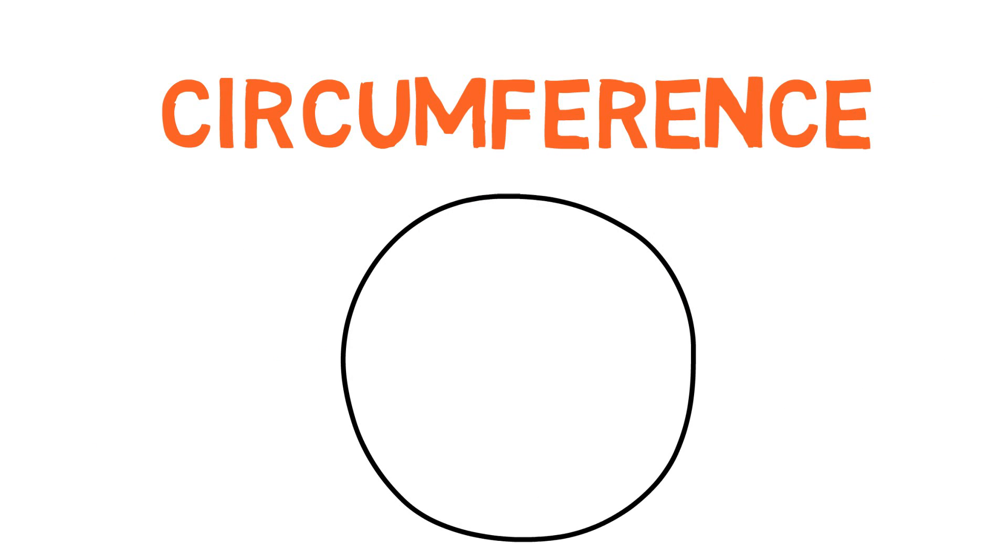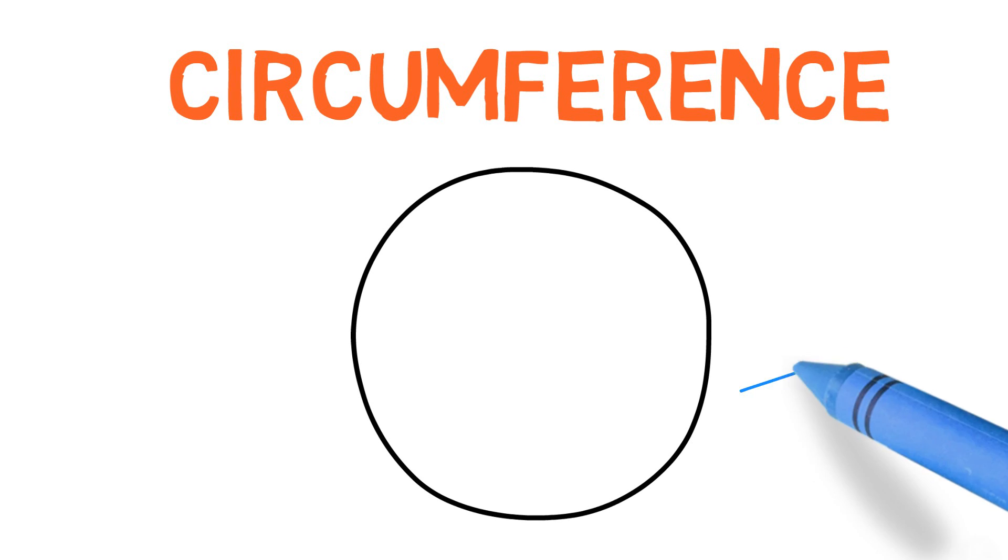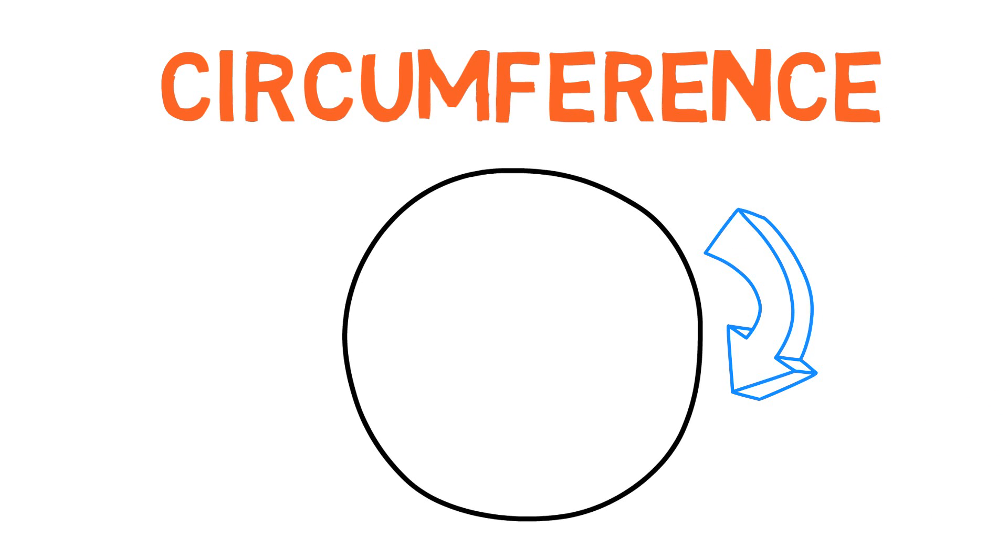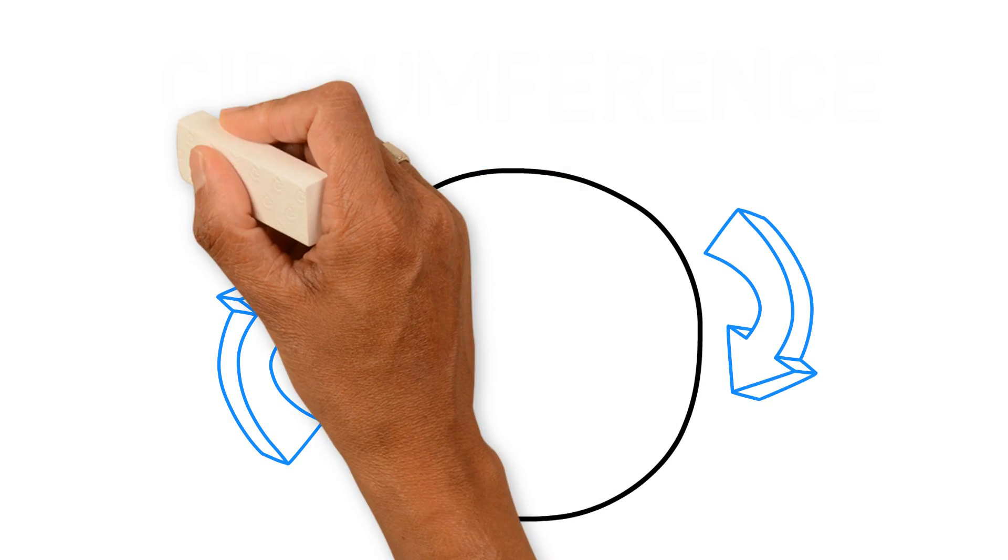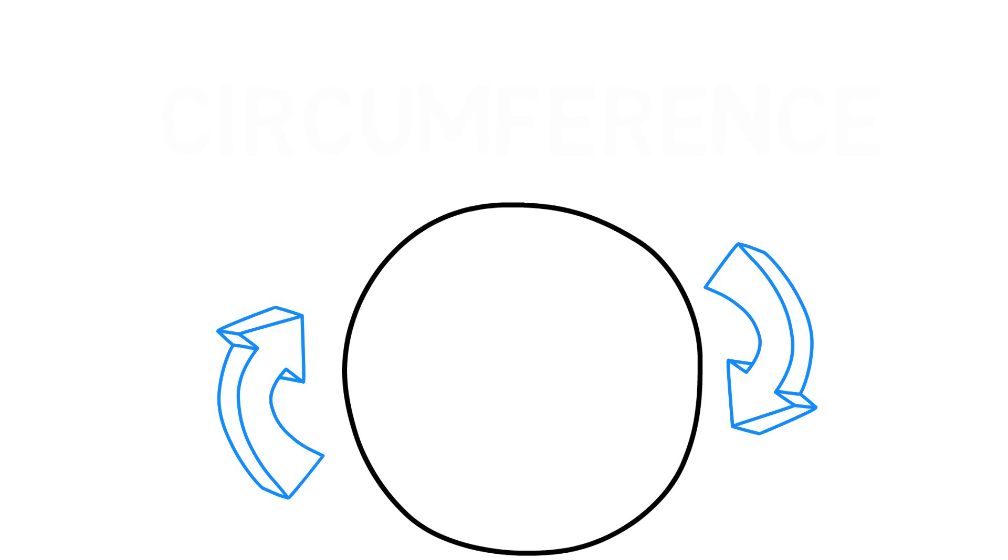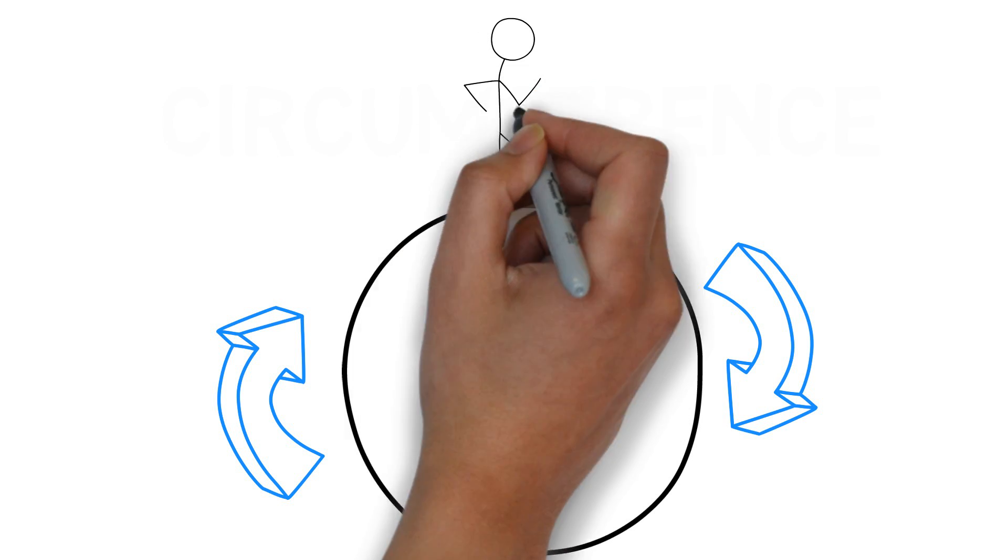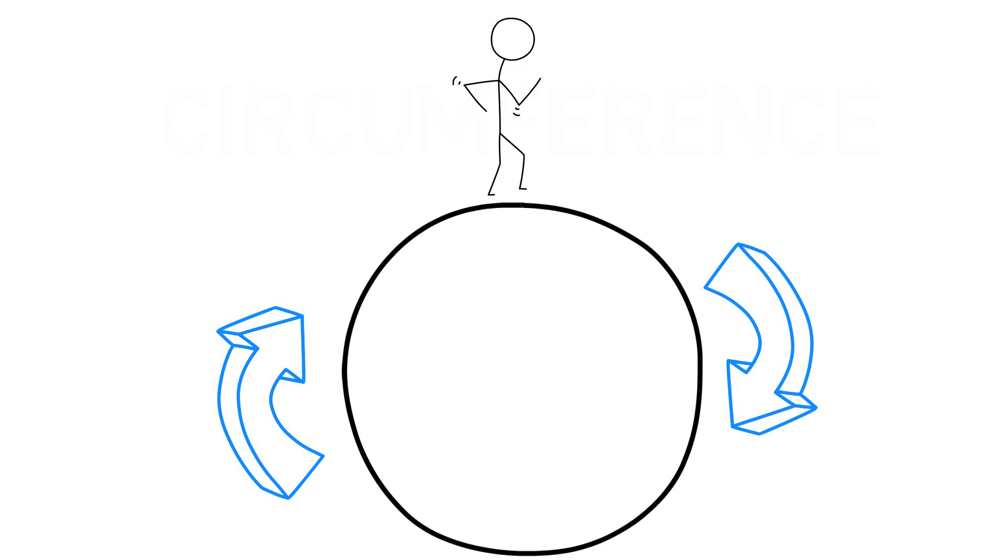The circumference of a circle. First let's see what it represents. The circumference of a circle represents the distance around it. So imagine you start walking along the boundary of a circle. If you did one round you would cover a distance equal to the circumference of the circle.